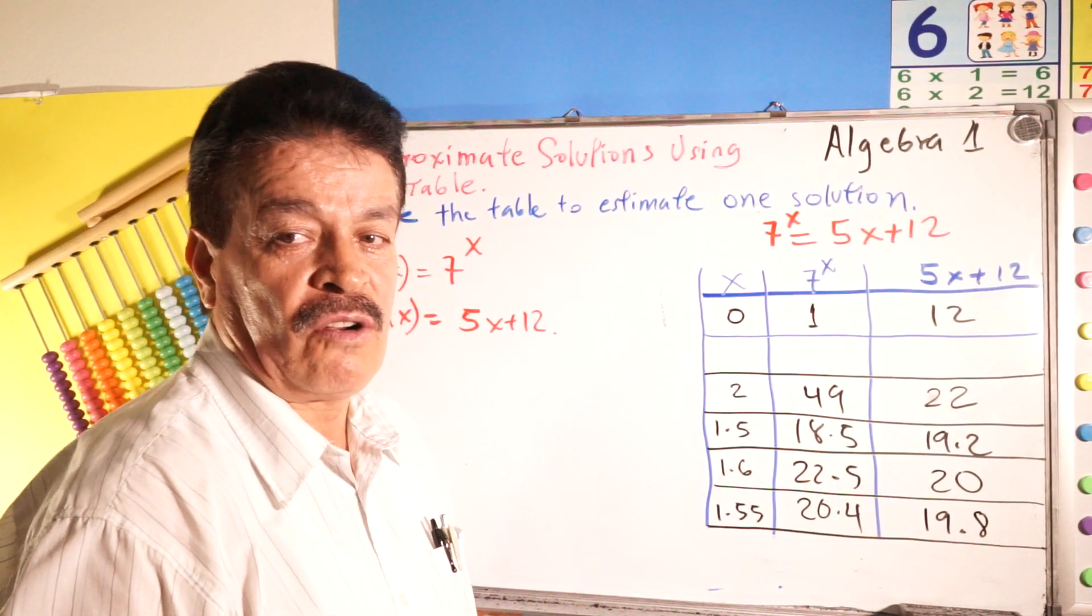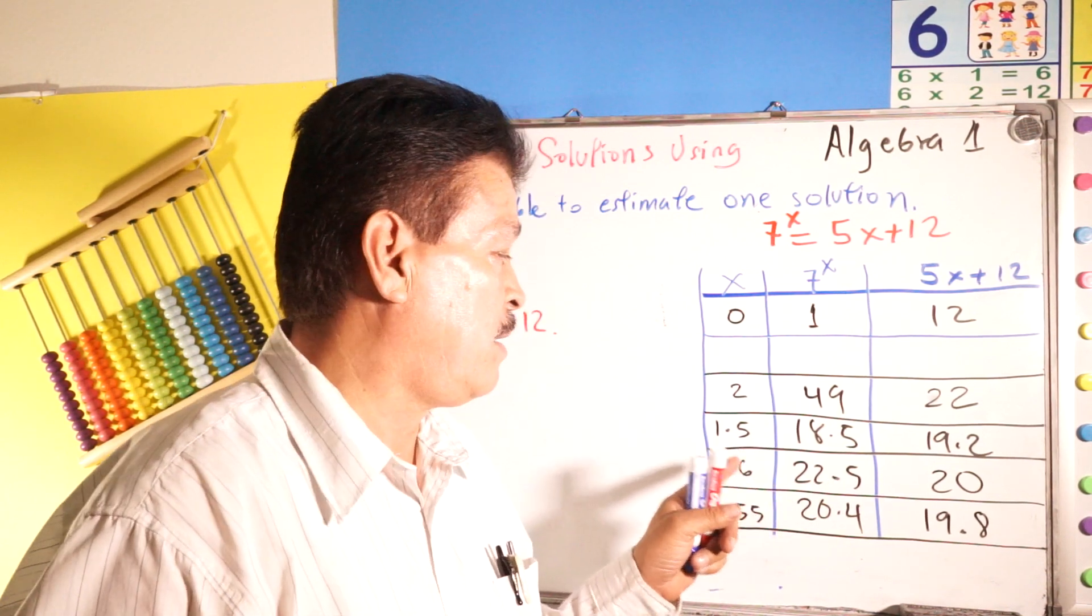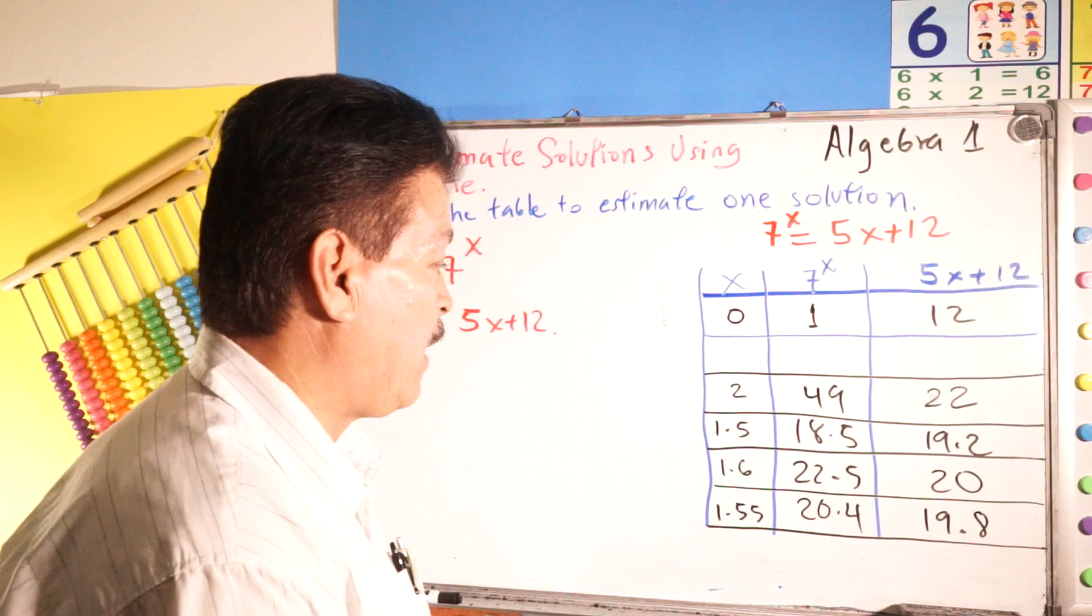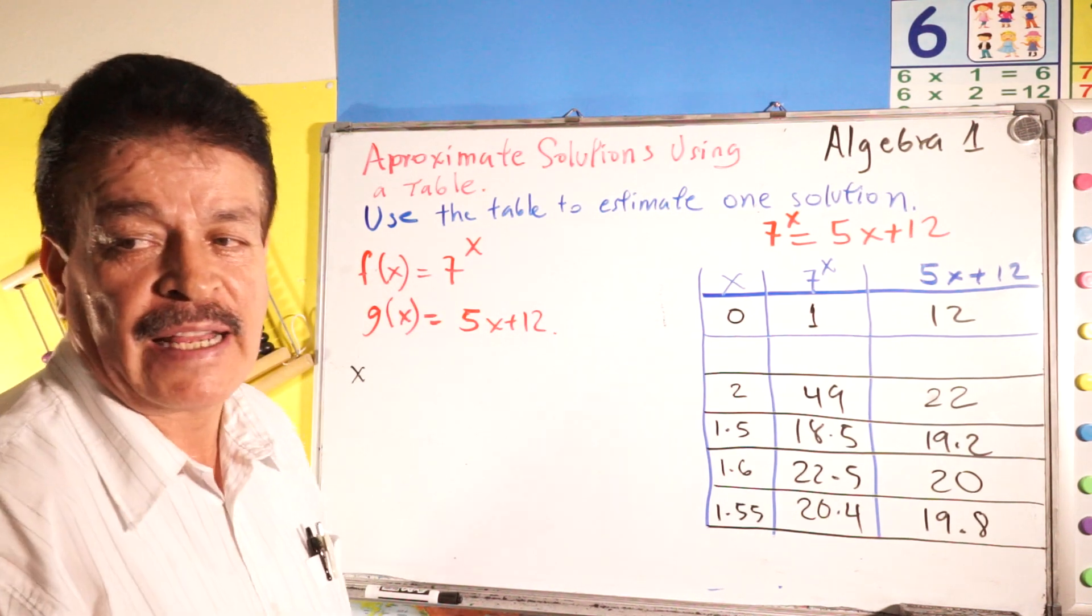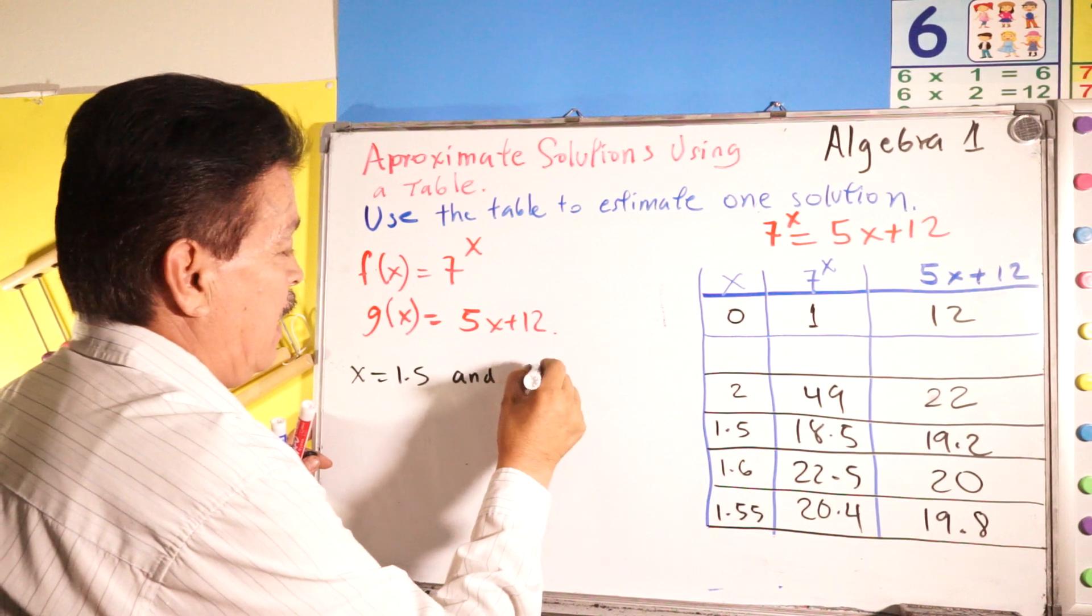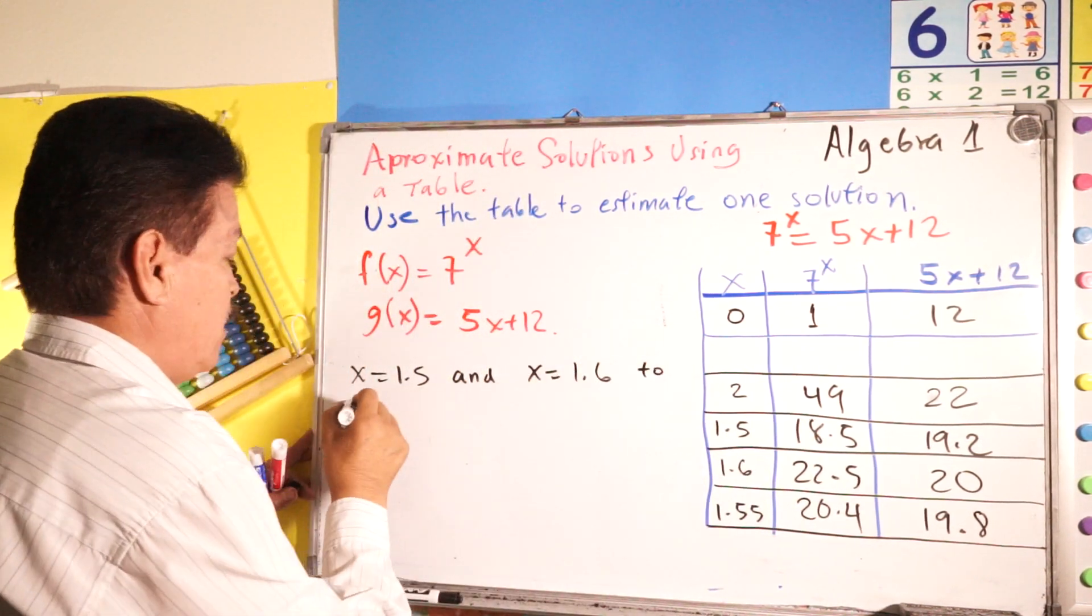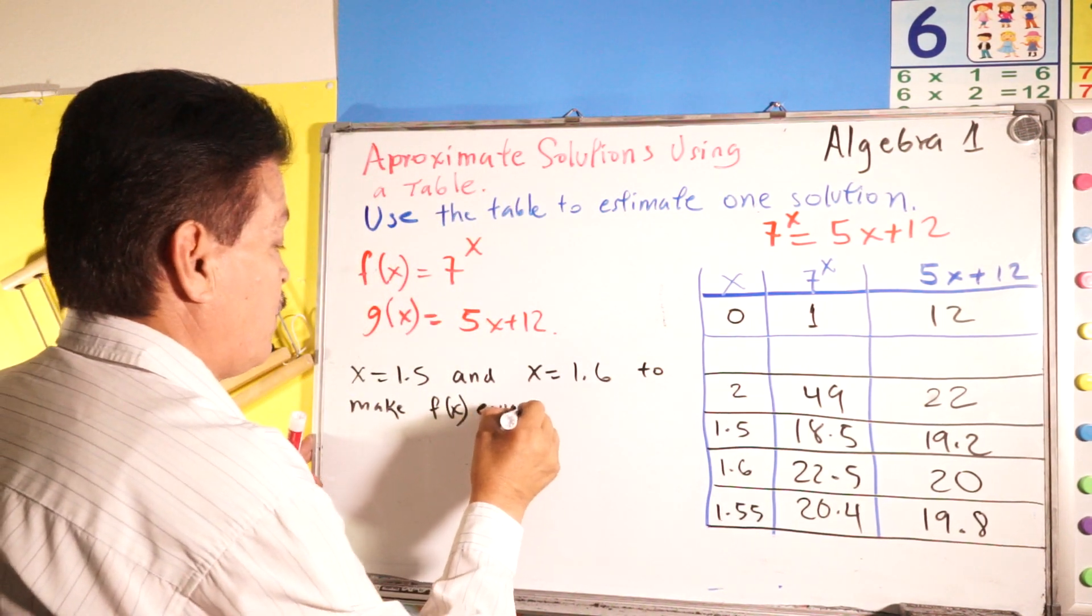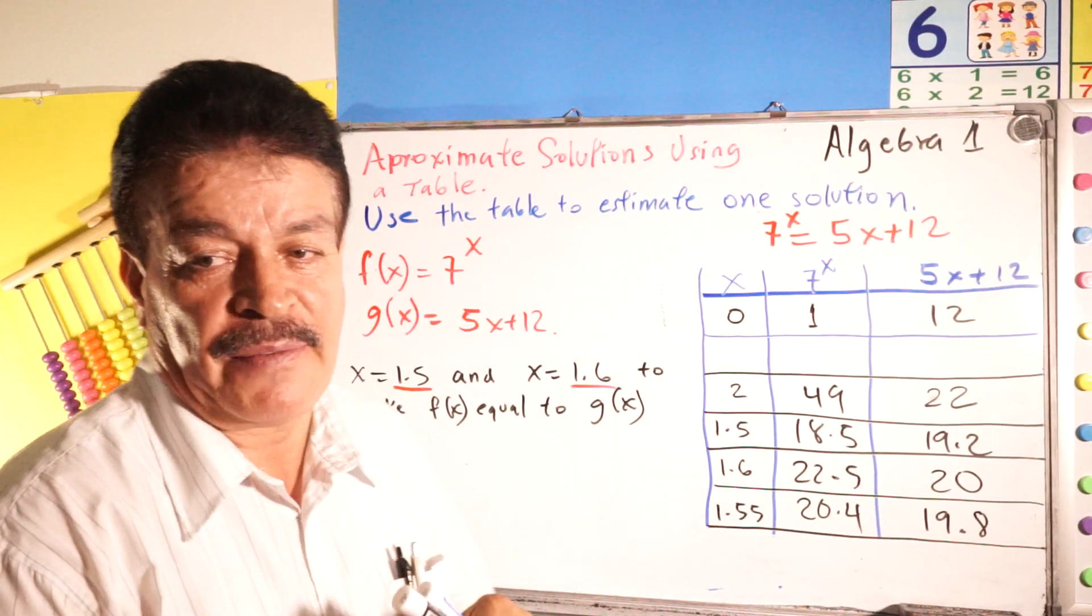What I mean this? We have to think about this mean that there is one value, one X value between X equals 1.5. There's one value between them to make F X equals to G X. See the numbers between these numbers.